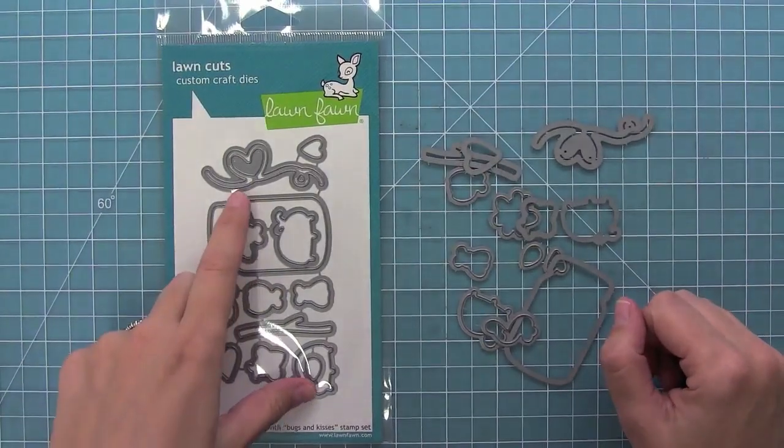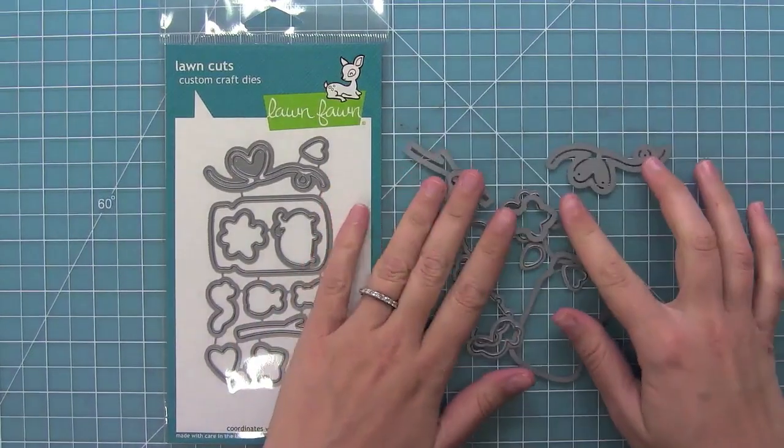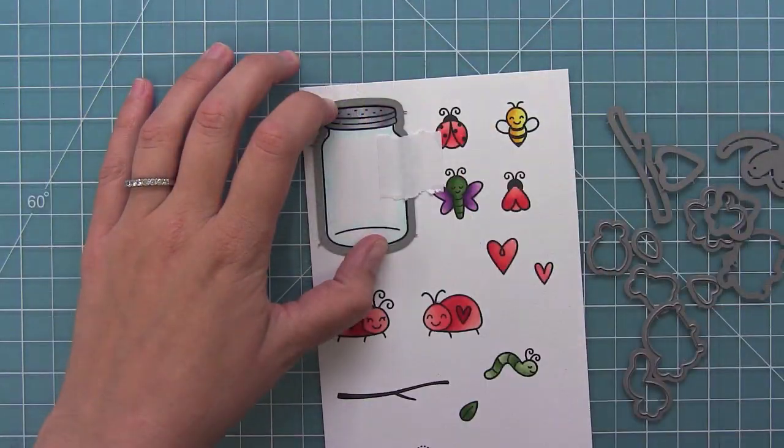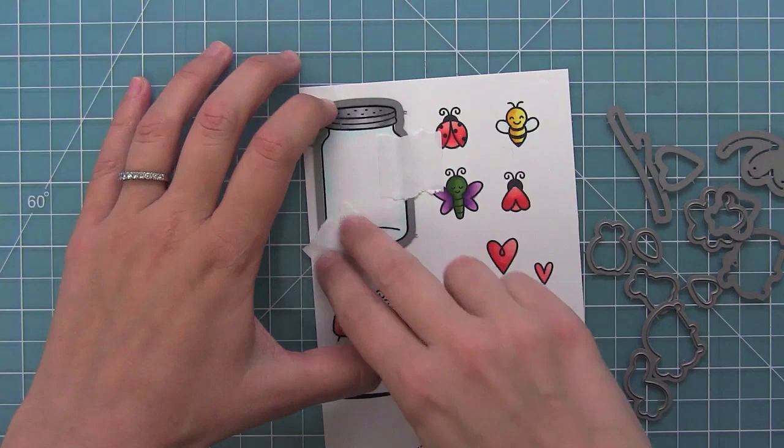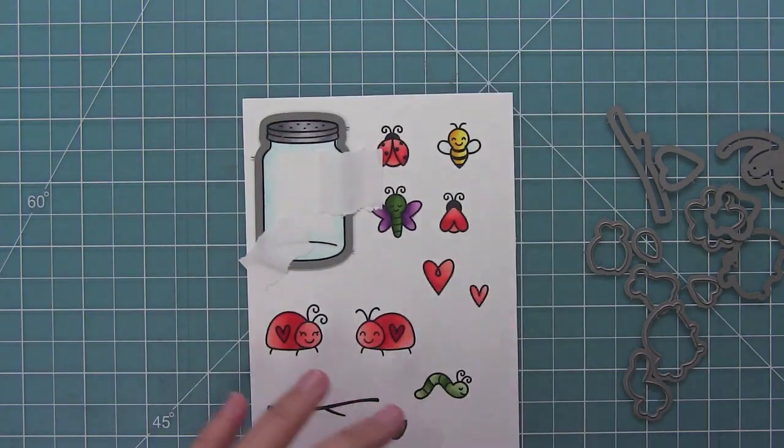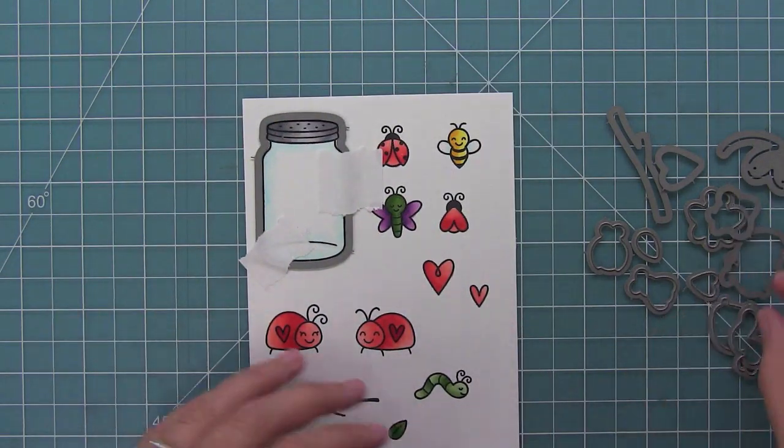These are the coordinating dies for the set. And those little tabs you just bend them back and forth until they break apart into all of their pieces. And you'll see here that they will line up exactly with the stamped line of your image.